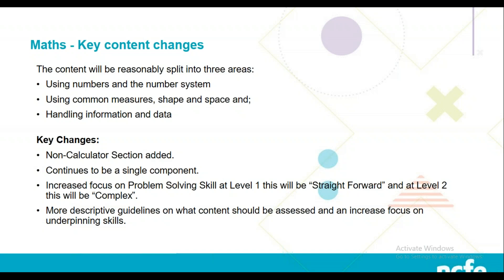The key change for maths assessments is the addition of a non-calculator section — both for entry level as well as Level 1 and Level 2. The non-calculator section will form 25% of the overall assessment, so within a 100-mark paper that's 25 marks. The remaining 75% will be a section where learners are allowed a calculator. It continues to be a single component, meaning there will be one pass mark for both sections combined — learners don't need to achieve a set score on each section individually.